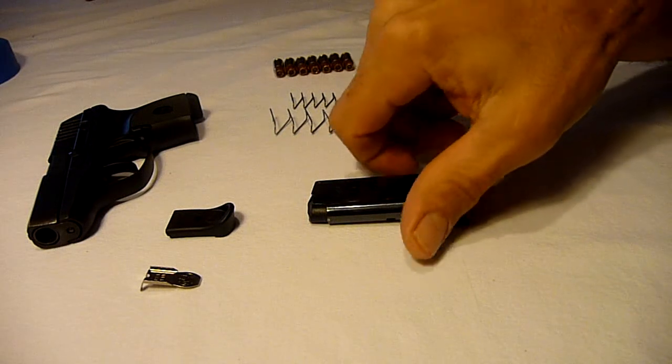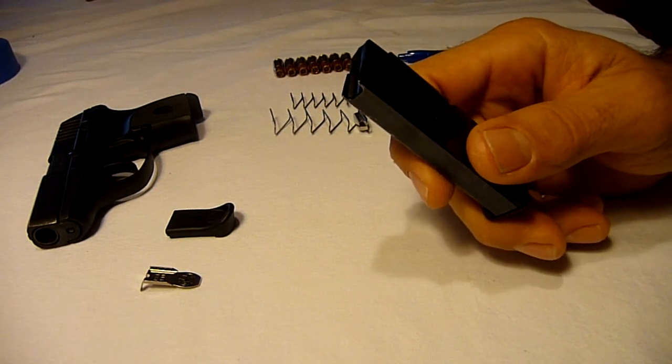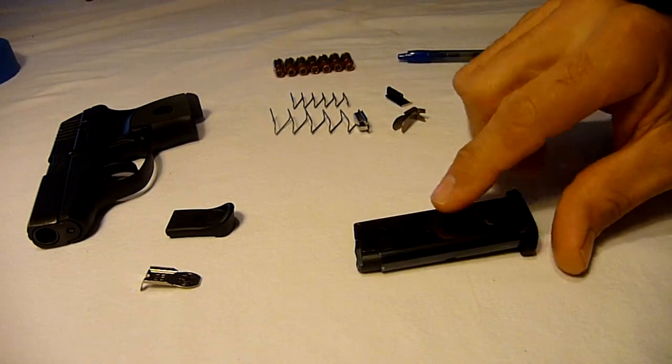This video will describe how to convert your six round factory magazine to seven rounds without adding a mag extension using the MagGut spring system. At the time of this video there are patents pending on this system.